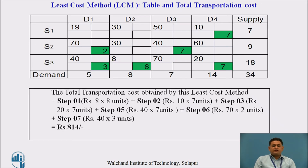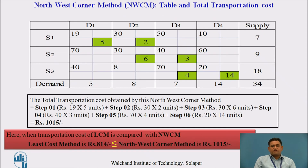This slide shows the overall table with the total transportation cost calculated using the least cost method. The total transportation cost is 814. Comparing with the Northwest corner method, the same problem yields a cost of 1015, which is greater. So the least cost method always gives a total transportation cost less than or equal to the Northwest corner method.